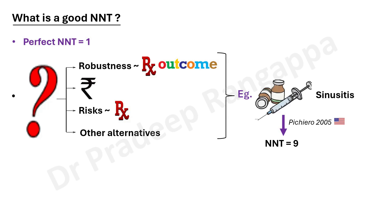A practical example: Pichero et al. found NNT of 9 for IV antibiotics for sinusitis — meaning for every nine patients treated, one had a favorable outcome. Despite being a positive study, it was not incorporated into pediatric guidelines because the risk of antibiotic resistance outweighed the benefit. This illustrates that NNT cannot be taken at face value. To summarize: NNT = 1 / ARR, from which relative risk, odds ratio, and relative risk reduction are all derived.